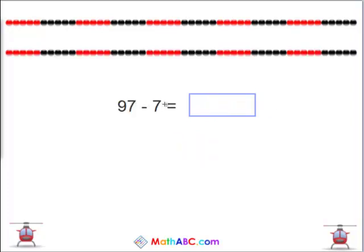97 minus 7 equals what? Again you know 7 minus 7 equals 0. This becomes what? Yes, 90. 97 minus 7 equals 90.